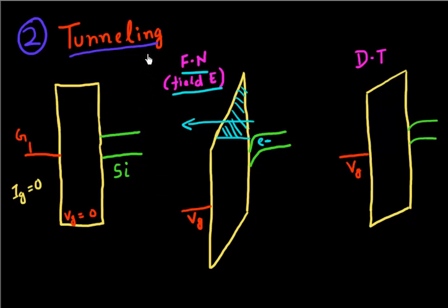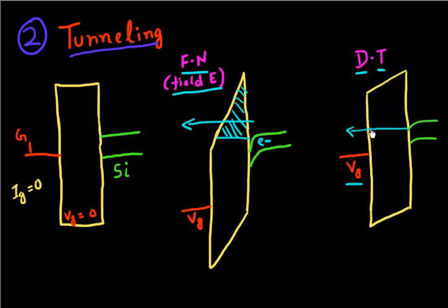The regime in between no tunneling and Fowler-Nordheim tunneling is known as direct tunneling. In direct tunneling, the potential is somewhere between zero volts and the Fowler-Nordheim tunneling voltage. In this case, the carriers tunneling from the substrate to the gate see a trapezoidal-shaped potential barrier rather than a triangular one.